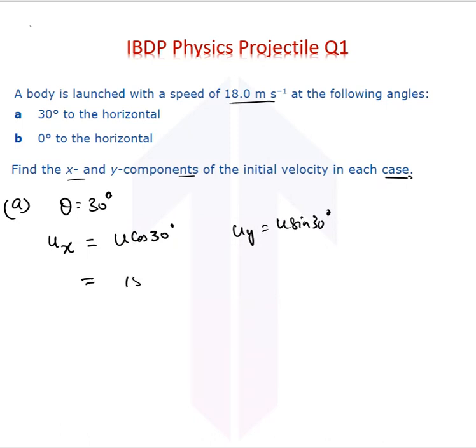When we calculate that, 18 times cos 30 gives us 15.6 meters per second. And uy equals 18 times sin 30, which is half, so 9 meters per second.